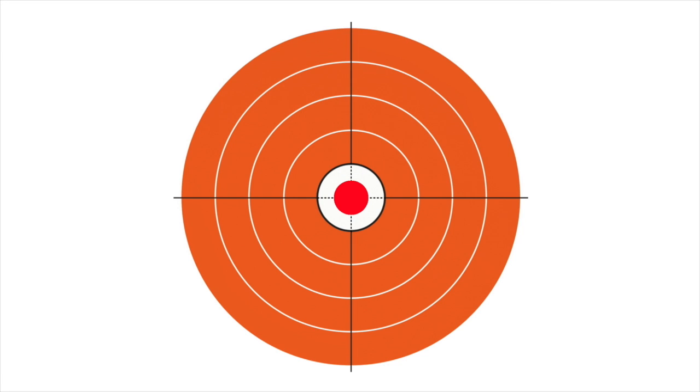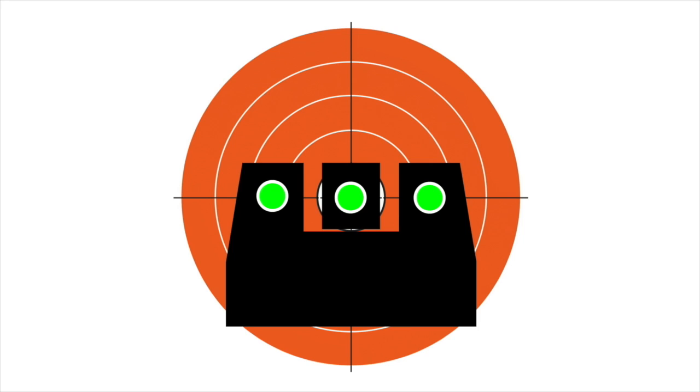Because of that dot now being so prevalent on front sights in one form or another, when people look at the actual target and they look at that bullseye, they want to put that dot on the front sight right on the bullseye. This is not the correct sight picture.